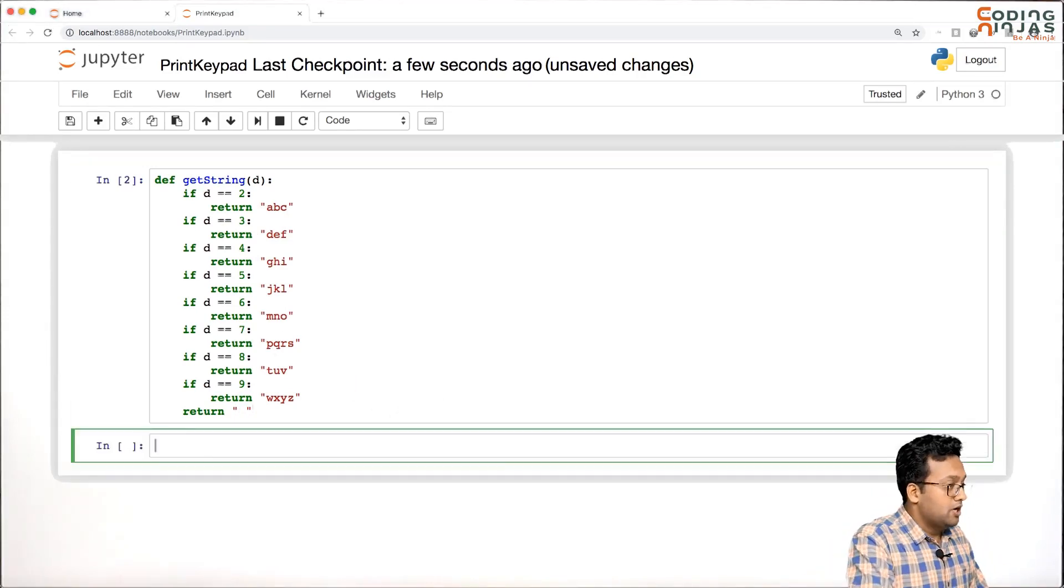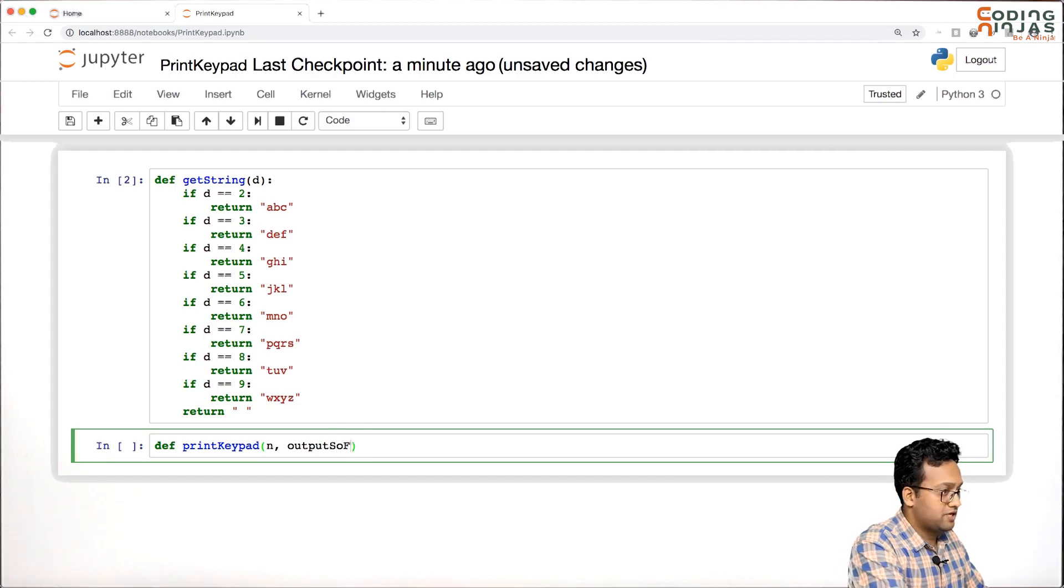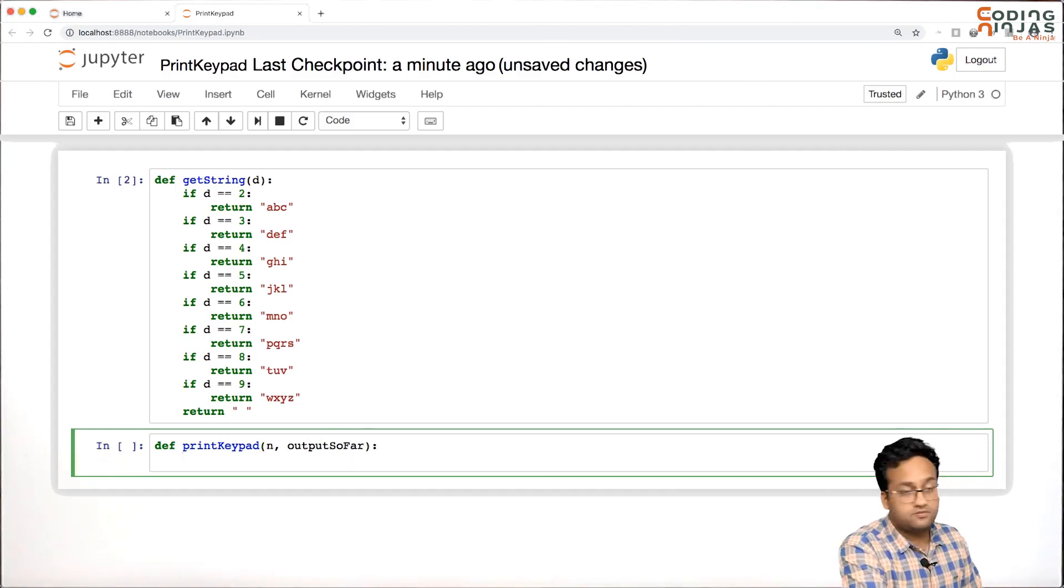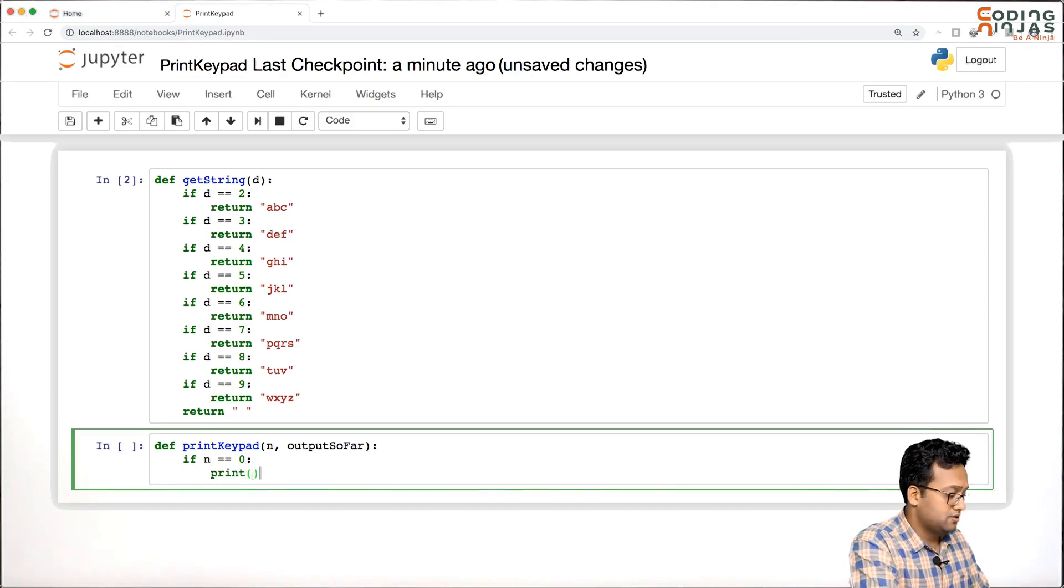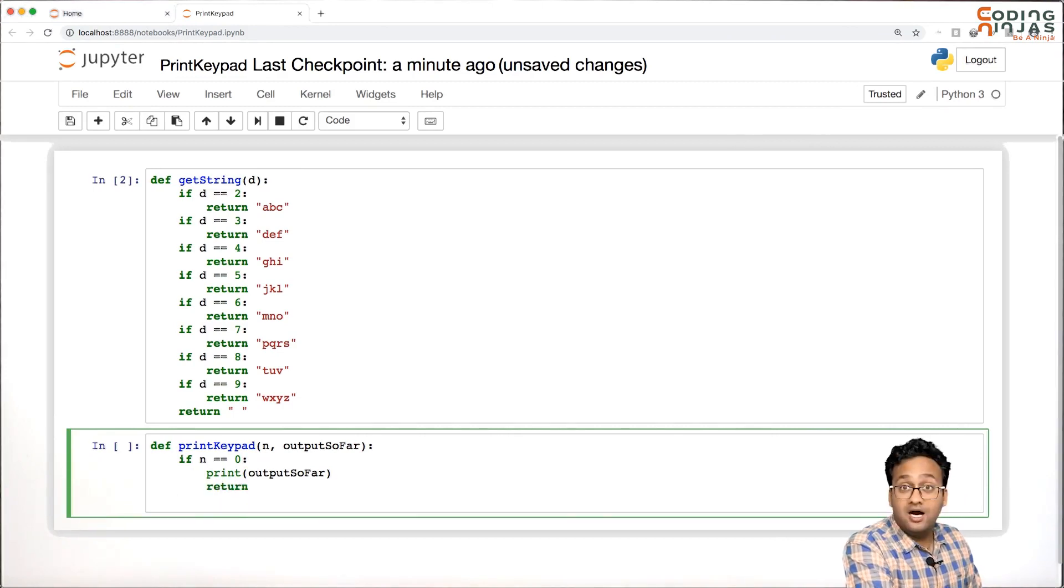The plan is that we will have print_keypad. We'll get a number and we'll get output so far. As we discussed, if n is 0, that means we have reached the base case. Output so far is one of the options that we were looking for, and we will return.